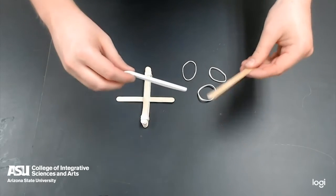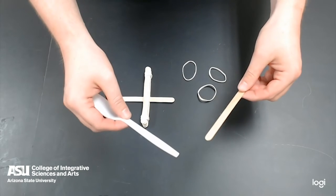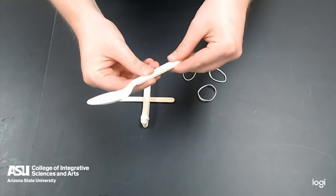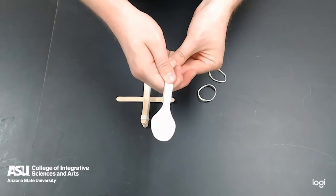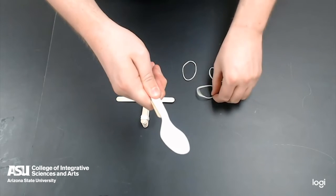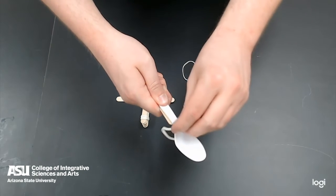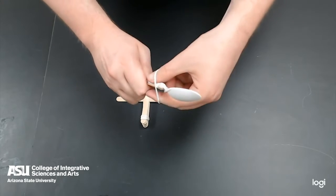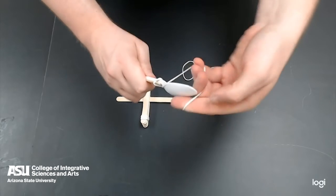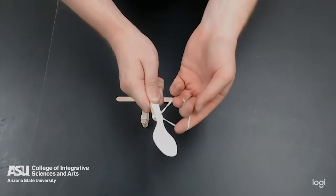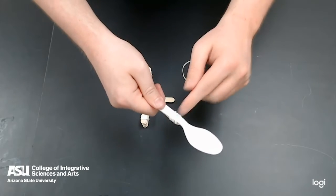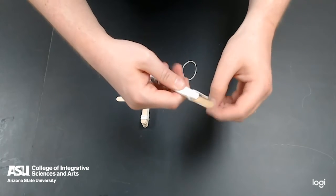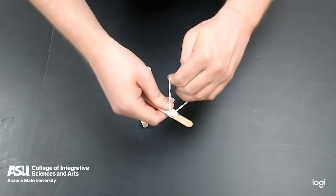Next we are going to attach the popsicle stick and the spoon using a couple rubber bands. Put the spoon on top of the popsicle stick. Once you have it where you want it, take a rubber band, put it around and begin to wrap it around the two together multiple times to keep it in place. You will do one here near the top, then use the other rubber band down here near the bottom to keep this end from moving.